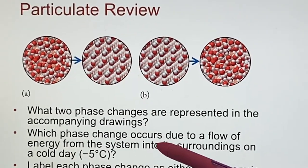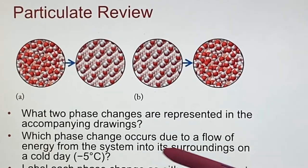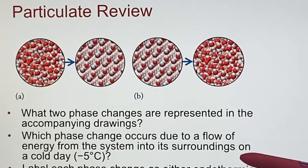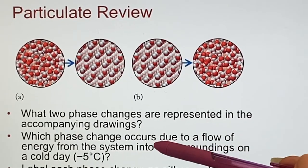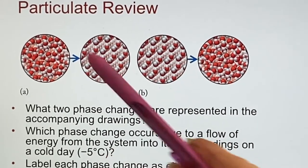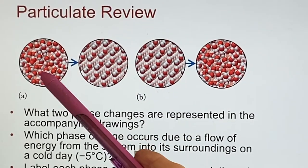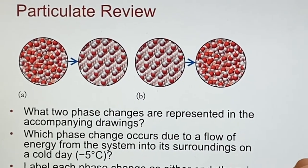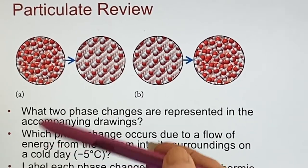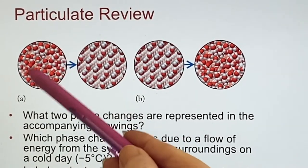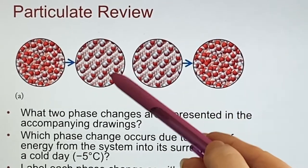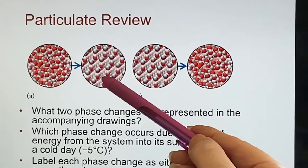Now what phase change occurs due to a flow of energy from the system into its surroundings on a cold day? Now that sounds a little odd the way they wrote that. But if I just asked you which one of these would happen on a cold day when it was below freezing? Well, you'd say this is what would be happening. The liquid water would turn into solid ice. The fact is, the reason that happens is that the energy that was here in the motion of these water molecules is escaping into the surroundings, leaving these in the orderly pattern motionless.